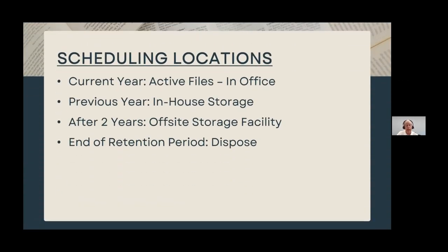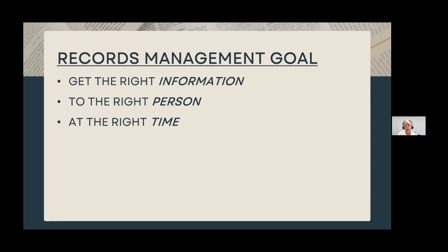The retention schedules only cover how long you must keep a record. You can set up your own internal schedules as to where you keep that record. For example: keep your current year records in your office where they're handy; at the end of the calendar or fiscal year, move them to a storage area within your building; as they're used less often, send them to an off-site storage facility until the retention period runs out. Do this regularly every year so that records don't pile up anywhere. Once you have a good records management program established, you can achieve the goal of getting the right information to the right person at the right time.